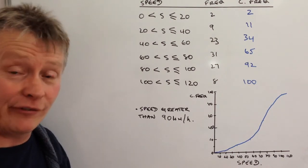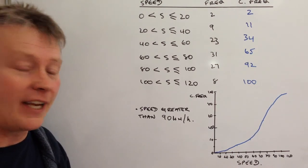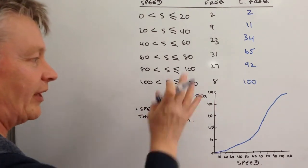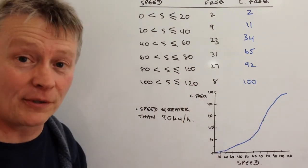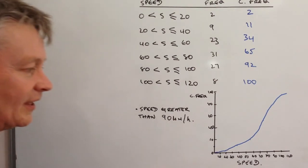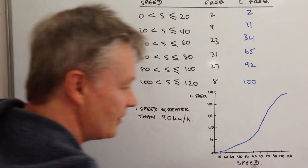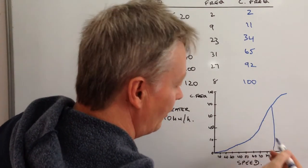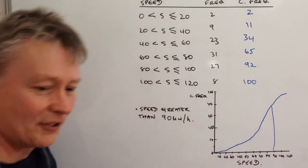Now, very typically, they'll then finish this type of question off with a one marker, a two marker where they'll ask you to work something out from the cumulative frequency graph. So in this particular case, speeds are greater than 90 kilometers per hour. Well, there's 90 kilometers per hour. So if I plot that along here, now I don't know how accurate this is going to be.